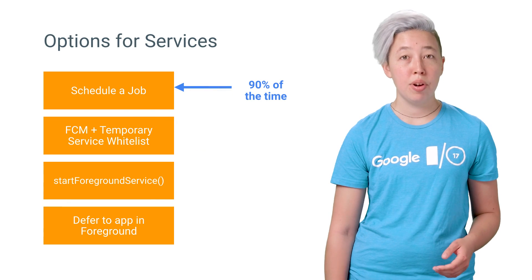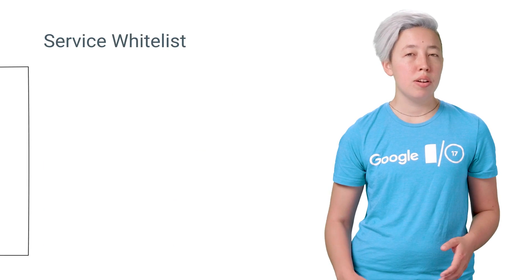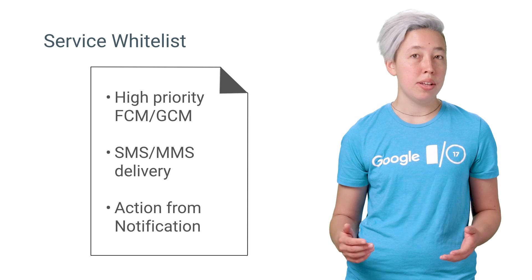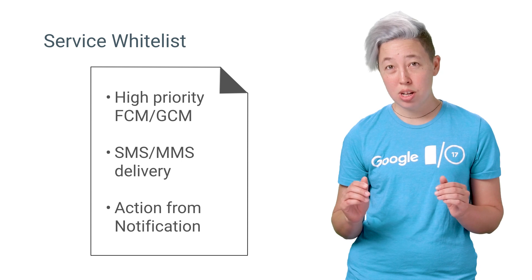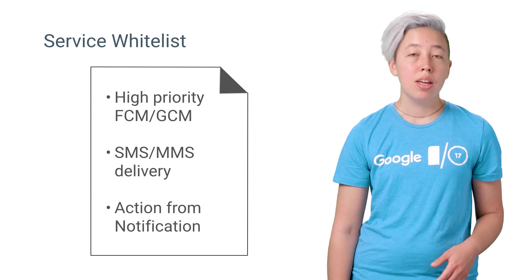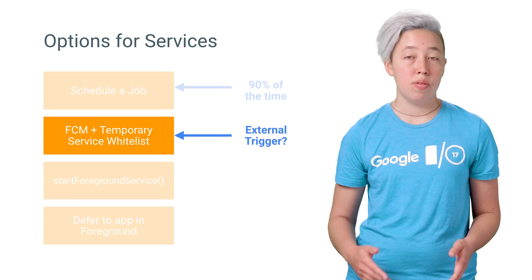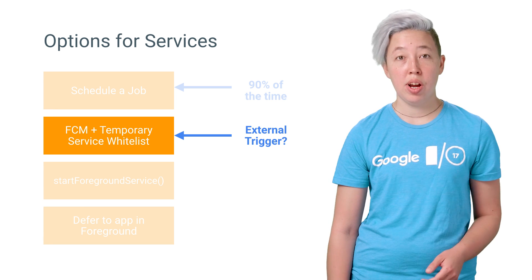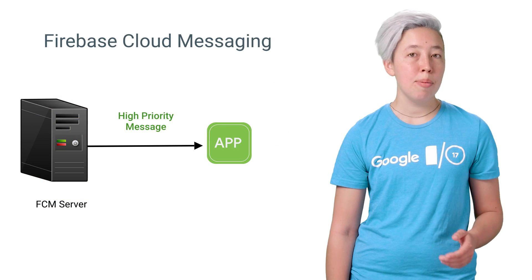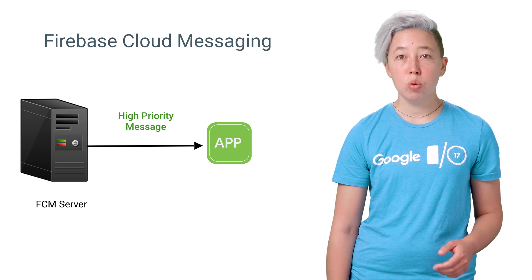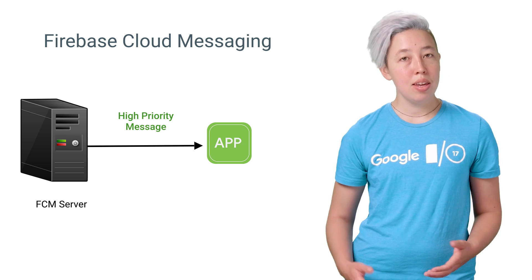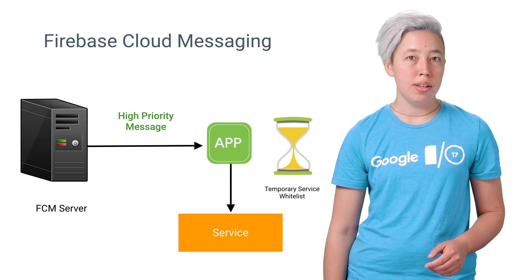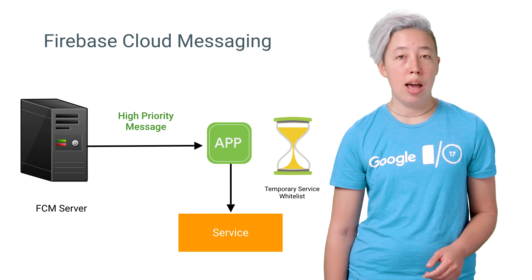Next is the temporary service whitelist. There are a few special cases when the app will be temporarily whitelisted and act for a short period of time as if it's in the foreground. If you want to trigger work when data on the server changes, consider implementing Firebase Cloud Messaging on your server and app. If you use a high priority FCM message, you will receive that message immediately, even when the system is in Doze. You will also get on that handy service whitelist, so you can start a service as if the app were in the foreground.